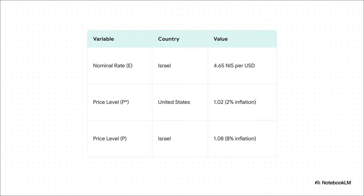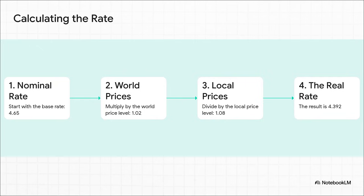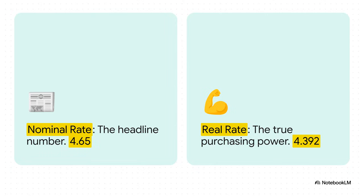Alright, time to do the math. We start with our nominal rate, 4.65. We multiply that by the US price level, which was 1.02. Then we take that whole result and divide it by Israel's price level, 1.08. And what does that give us? Boom — 4.392. So let's put these two numbers next to each other. The nominal rate on the news was 4.65, but the real rate — the one that actually tells you about purchasing power — was lower: 4.392. That gap is what economists call erosion. It's like the true value of the currency got worn away by inflation.